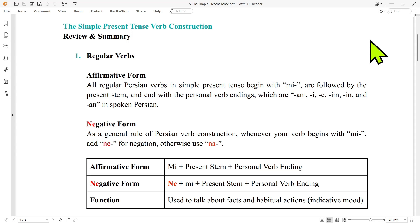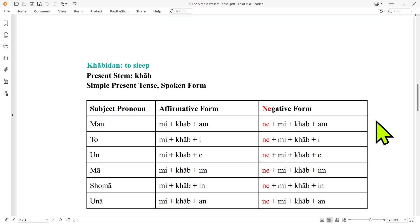And now the negative form. As a general rule of Persian verb construction, whenever your verb begins with mi, add ne for negation. Otherwise, use na. For example, for khabidan to sleep, with the present stem khab, we have man mi khabam, man ne mi khabam.